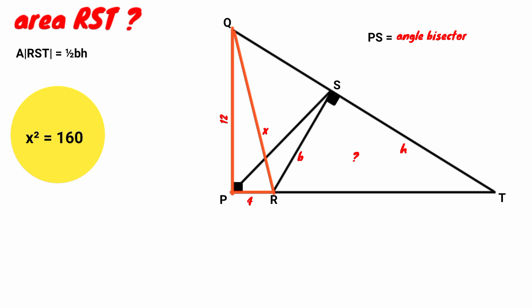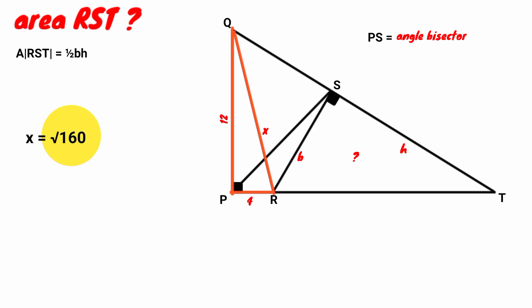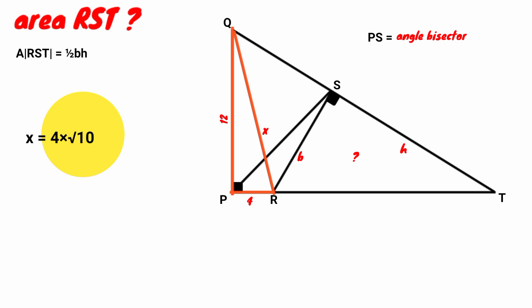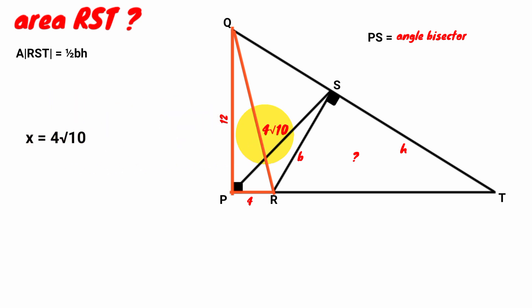Taking the square root of both sides: X = √160. Since 160 = 16 × 10, we get √16 × √10 = 4√10. So X = 4√10. That is, the length of line segment QR is 4√10.